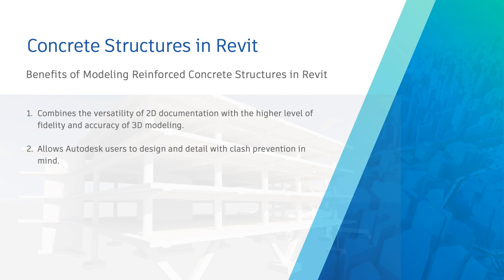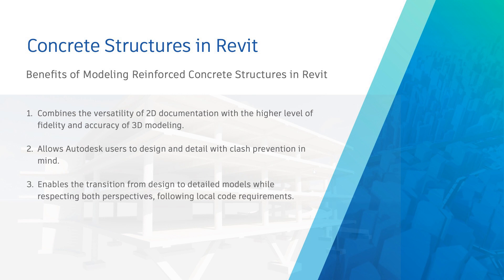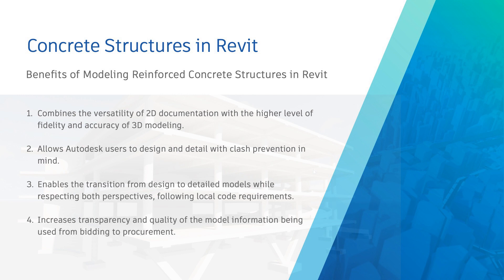It allows Autodesk users to design and detail with clash prevention in mind, to reduce clashes both in pre-construction and site execution project phases. Revit enables the transition from design intent to detailed models while respecting both perspectives, following local code requirements and automating the process of making changes so they are less disruptive to the project. It increases the transparency and quality of model information used from bidding to procurement, not only by providing quantifiable information but also by enabling access to it in collaboration-friendly environments.